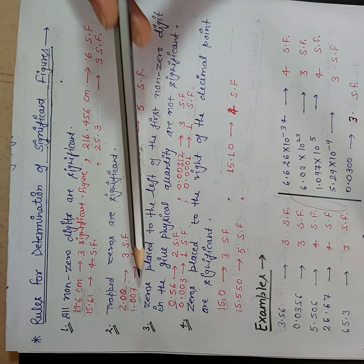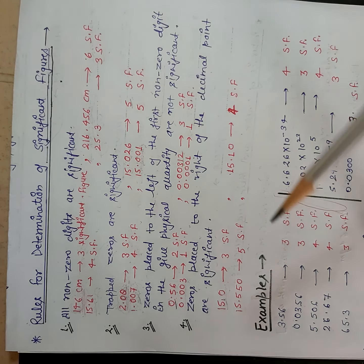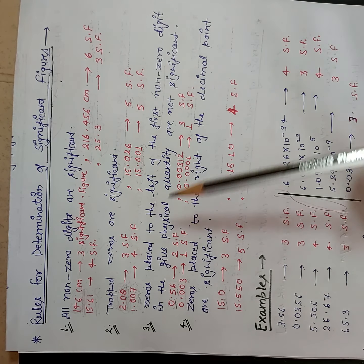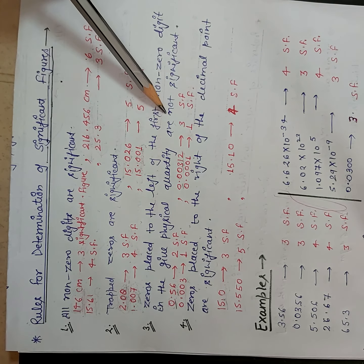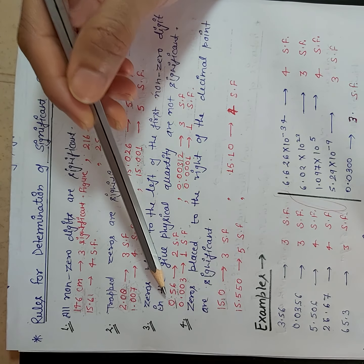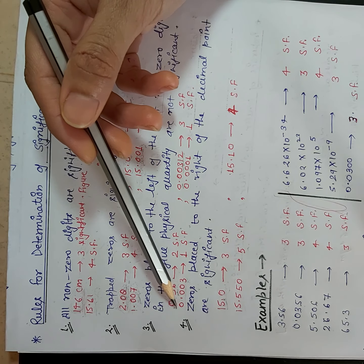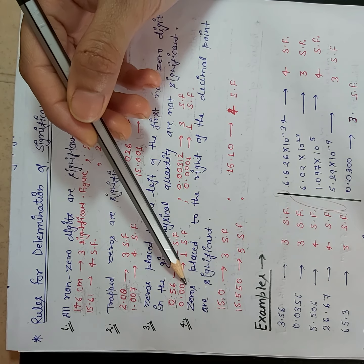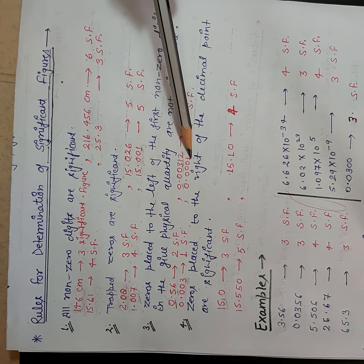Our third rule is: zeros placed to the left of the first non-zero digit in the given physical quantity are not significant. So if you find any zero which is placed to the left of the first non-zero digit, you will not consider that zero as a significant figure. So here only two significant figures, here only one significant figure is present, here only three significant figures are present, and here only one significant figure.